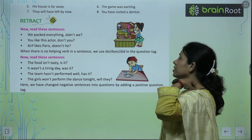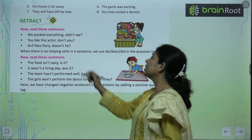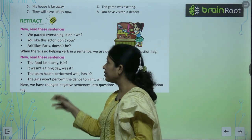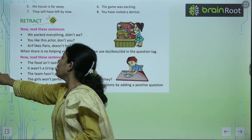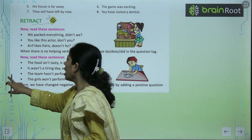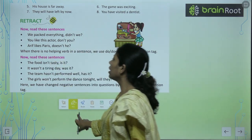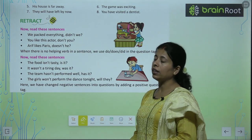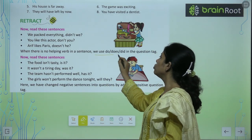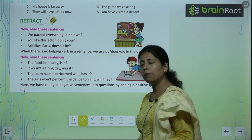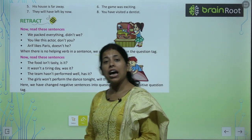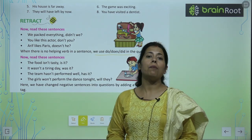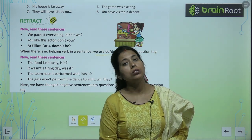Read these sentences: We packed everything — didn't we? You like this actor — don't you? यहाँ पर when there is no helping verb in the sentence, we use do, does, and did। तो जो कोई भी helping verb नहीं है — 'are' नहीं, 'has' नहीं — तो वहाँ पर did, does, और do का use करेंगे।